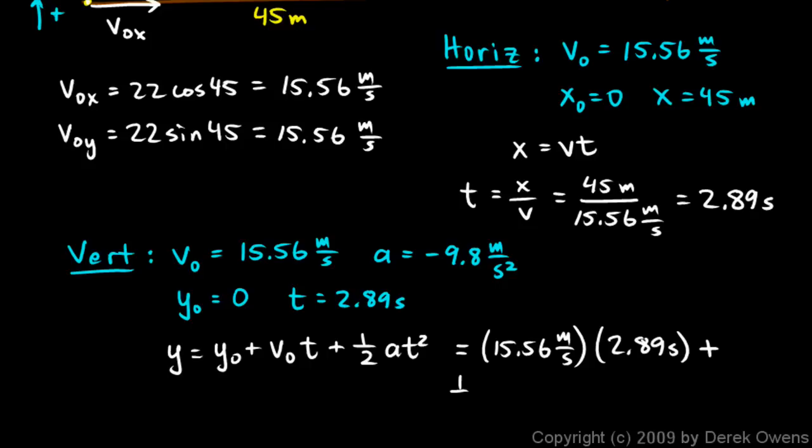plus one half at squared. So that's one half times negative 9.8 meters per second squared times 2.89 seconds squared. And these units all work out. The seconds squared cancels leaving us with meters there and the seconds cancels there leaving us with meters there. So my answer is a certain number of meters plus a certain number of meters and those numbers work out